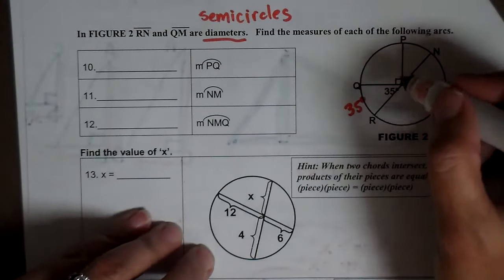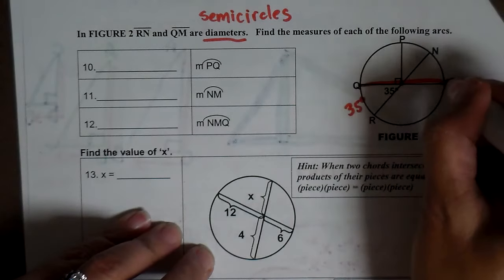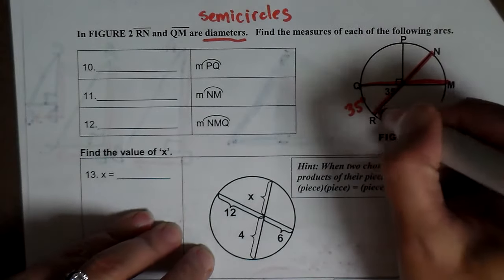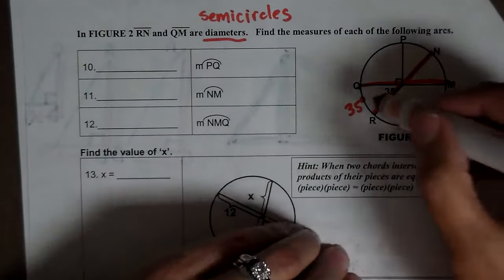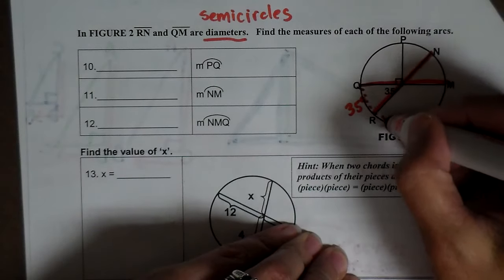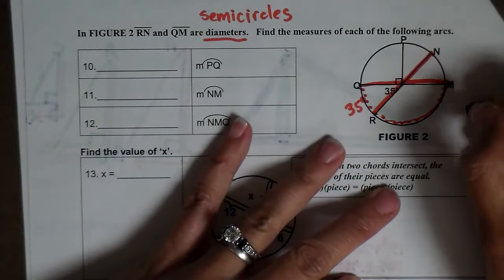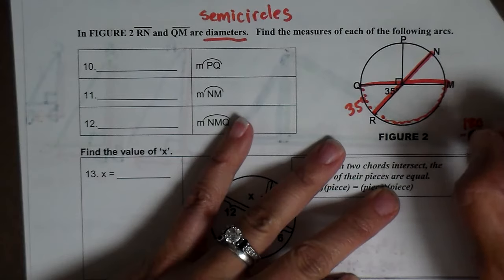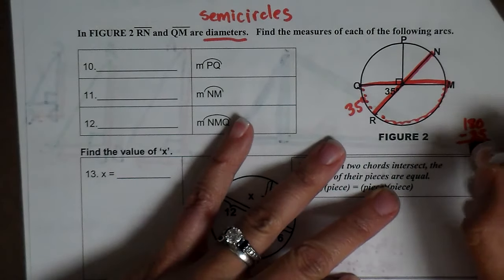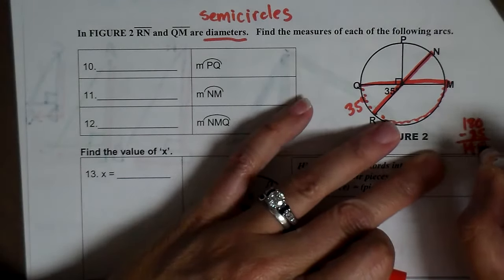Now since this is a diameter and this is a diameter, that means they cut the circle in half. So this whole arc right here has to add up to what? 180. So to find this one, I do 180 minus 35.